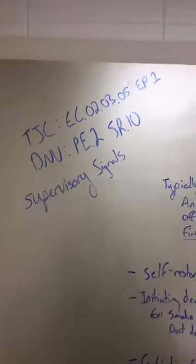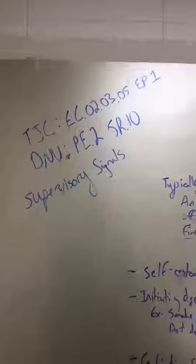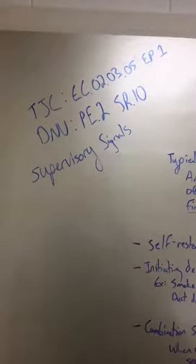So we're just going to dig right in. For those of you who are familiar, a lot of you probably know this is Joint Commission EC235EP1. For DNV this will fall under your PE2SR10 stuff. So supervisory signals. First off, what are they?